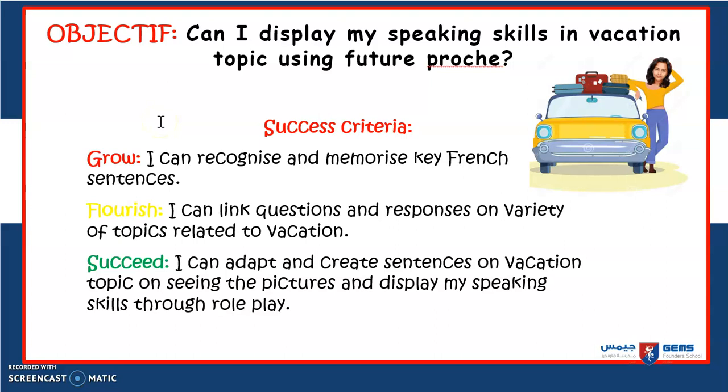Learning Objective: Can I display my speaking skills in the vacation topic using Futur Proche? Success criteria — Grow: I can recognise and memorise key French sentences. Flourish: I can link questions and responses on a variety of topics related to vacation. Succeed: I can adapt and create sentences on the vacation topic on seeing the pictures and display my speaking skills through roleplay.